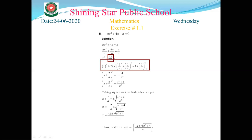The fourth step is to close the formula on the left-hand side. Here a is x and b is 2/a, giving (x + 2/a)². On the right-hand side, 1 + (2/a)² = 1 + 4/a². Taking LCM as a², the right-hand side becomes (a² + 4)/a².